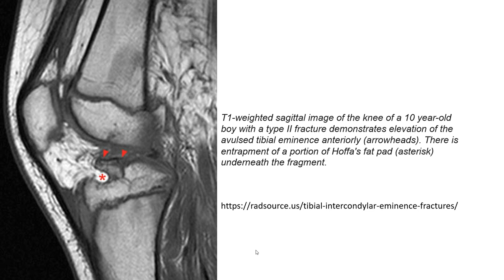This is an example of the knee of a 10-year-old boy with a Type 2 fracture, demonstrating elevation of the avulsed tibial eminence anteriorly. The arrowhead indicates this elevation, and there is an entrapped portion of the infrapatellar fat pad, marked by an asterisk, underneath the fragment.